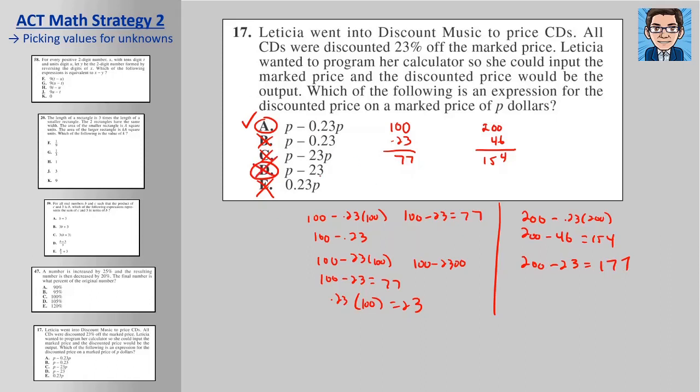So whenever you get two answers, and that's why you don't want to pick numbers that are too simple. 100 is usually a good one to pick for percentages, but 200 also works and it's still pretty easy to work with. But if you do get two answers that work for the numbers that you picked, just go and pick another number. And you don't have to recheck the ones that are out. Once these are out, they're out. So you don't have to, with 200, you don't have to recheck these. You just have to check the two that worked with the 100 and see which one of them works again.